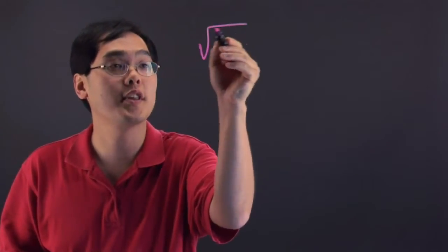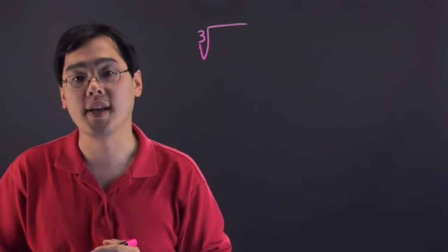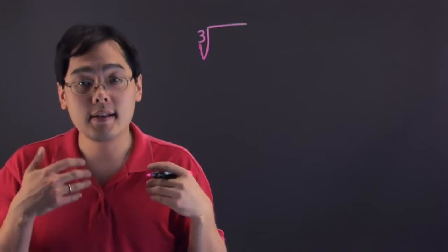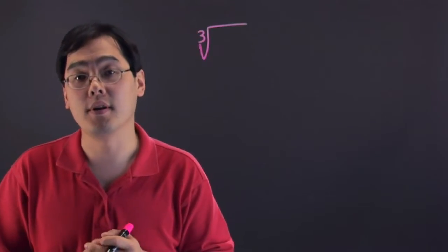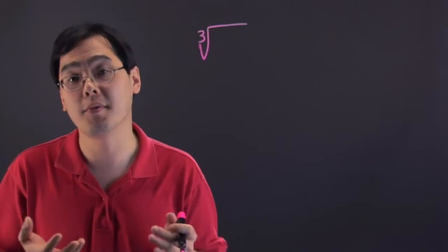So the notation associated with cube rooting is often times the radical with the 3 inside the little hook here. Now, it really depends by the number and when it comes to finding the cube root of a value because every number is going to be different.